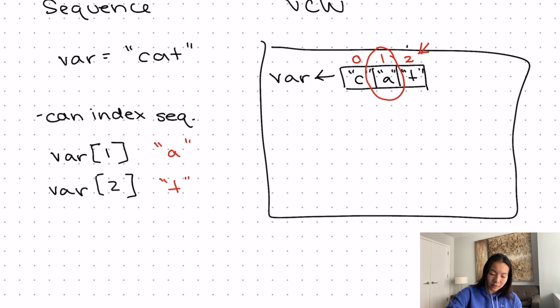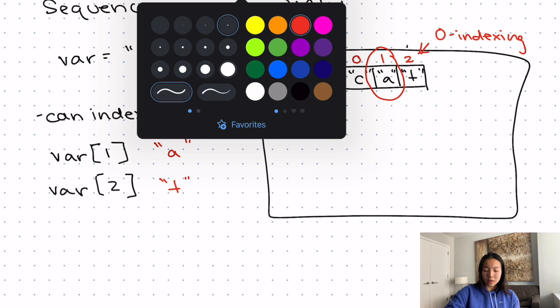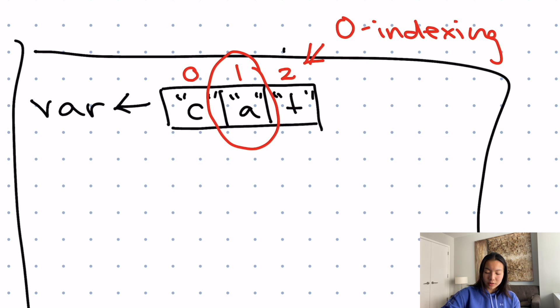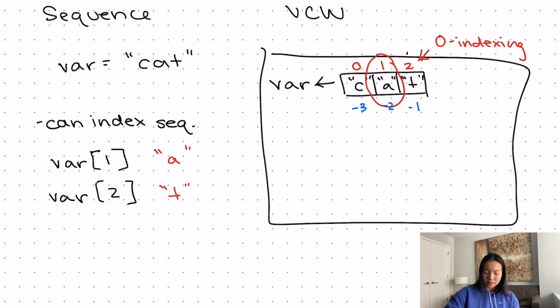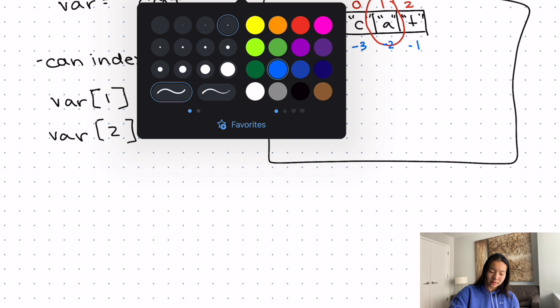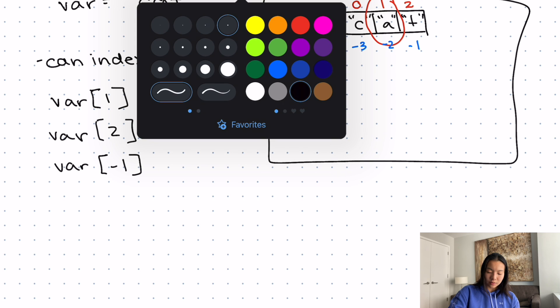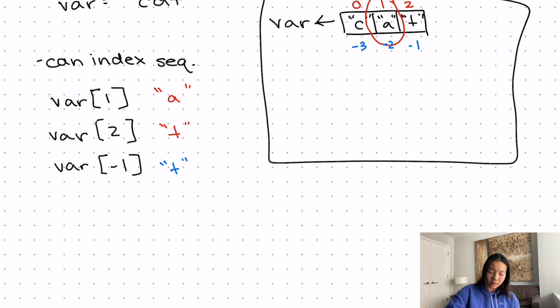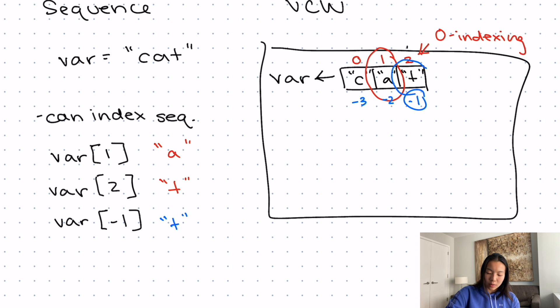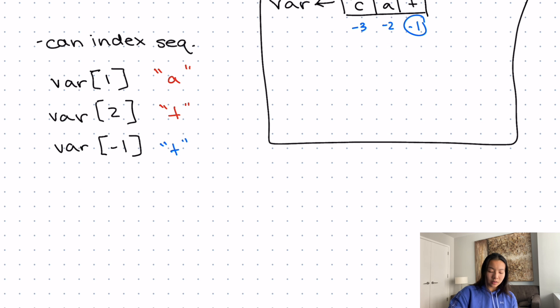This concept of stuff starting at zero is known as zero indexing. In addition, you can also start from the end. So we could also make this the negative one index, the negative second index, and the negative third index. If I had asked for var of negative one, this would also give me t because I go to index negative one. So this is called indexing.